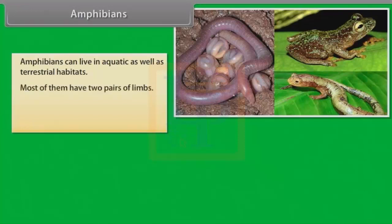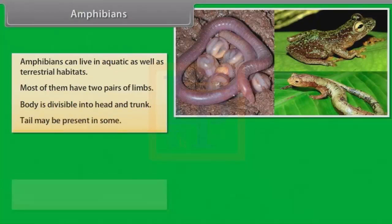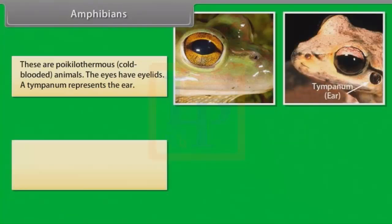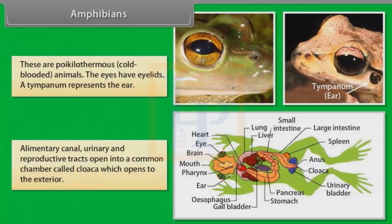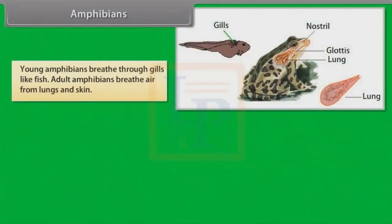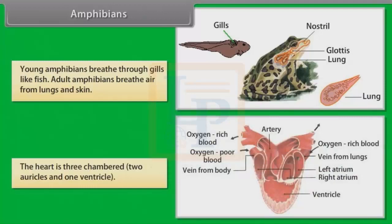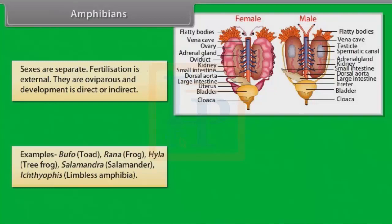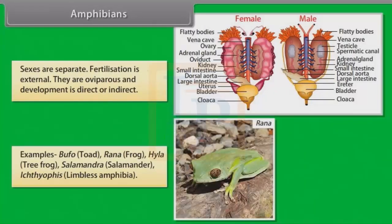Amphibians: Most of them have two pairs of limbs. Body is divisible into head and trunk. Tail may be present in some. The amphibian skin is moist and without scales. These are poikilothermous, that is, cold-blooded animals. The eyes have eyelids. A tympanum represents the ear. Alimentary canal, urinary and reproductive tracts open into a common chamber called cloaca, which opens to the exterior. Young amphibians breathe through gills. Adult amphibians breathe air from lungs and skin. The heart is three-chambered — two auricles and one ventricle. Sexes are separate. Fertilization is external. They are oviparous and development is direct or indirect. Examples: Bufo (Toad), Rana (Frog), Hyla (Tree Frog), Salamandra (Salamander), Ichthyophis (Limbless Amphibia).